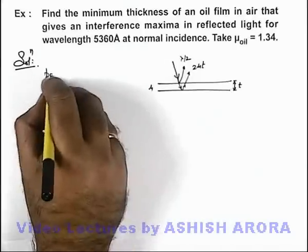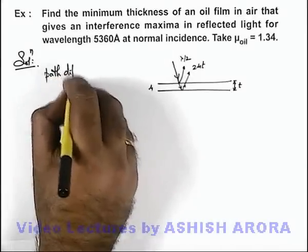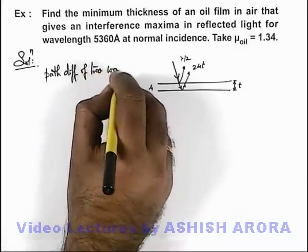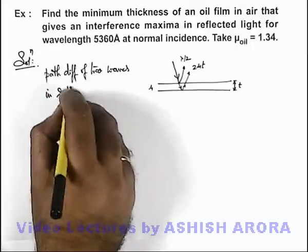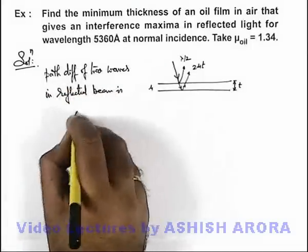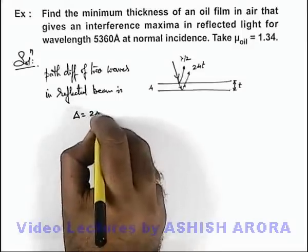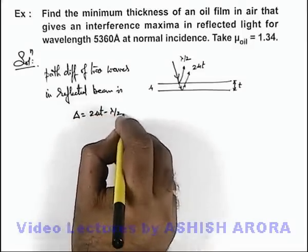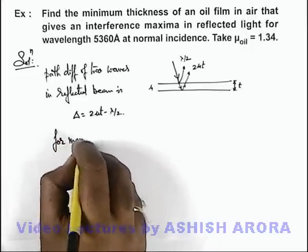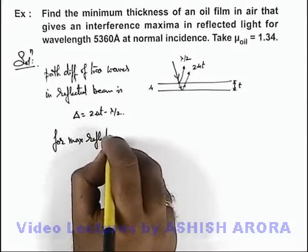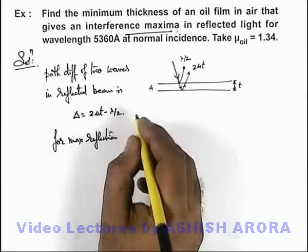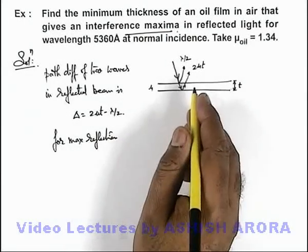We can directly use the path difference of the two waves. In the reflected beam, delta is written as 2μt minus λ/2. For maximum reflection — that is, when interference maxima is obtained — this delta must be an integral multiple of λ.